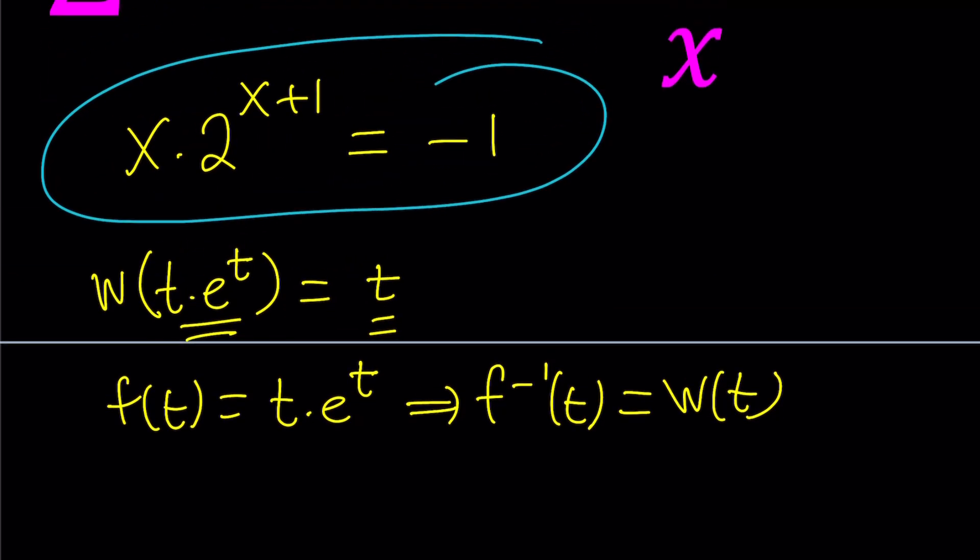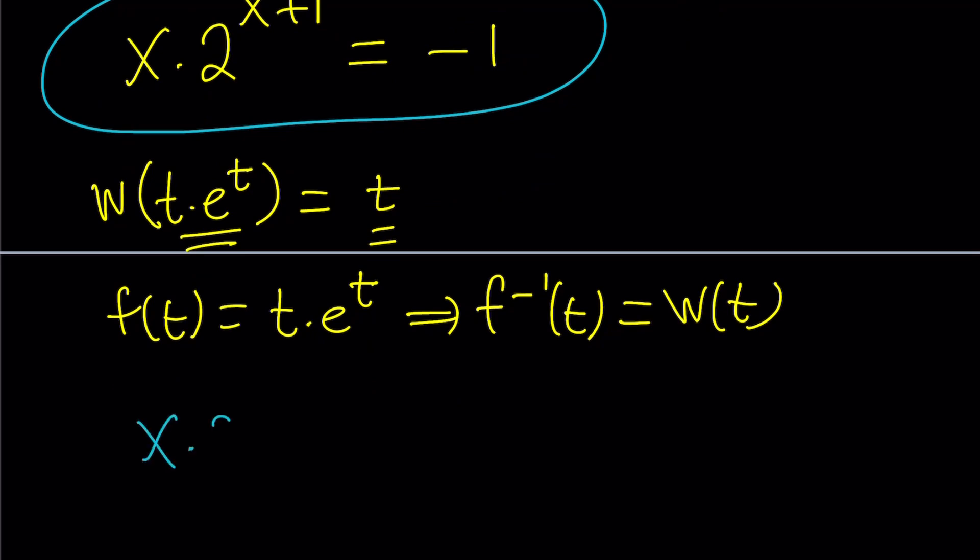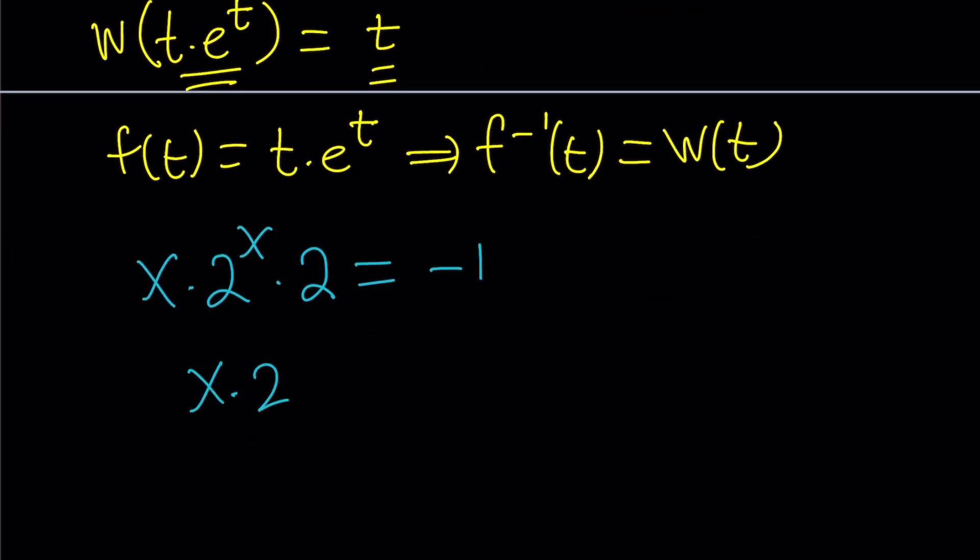First of all, 2 to the power x plus 1 can be broken down and written as 2 to the power x times 2. And then we can put the 2 on the right-hand side by division, x times 2 to the x equals negative 1 half. We're not there yet, but we're pretty close. If we had an e instead of the 2, this would work.